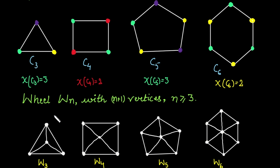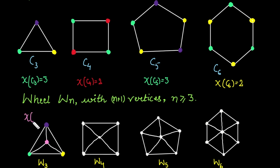From the previous result, C3 requires 3 colors. We use the same colors for the outer vertices. The additional central vertex is connected to all three cycle vertices and is adjacent to all three different colored vertices, so it cannot use any of those 3 colors. Therefore, we need a new color — let's say pink. Total colors used is 4, so the chromatic number of W3 is 4.